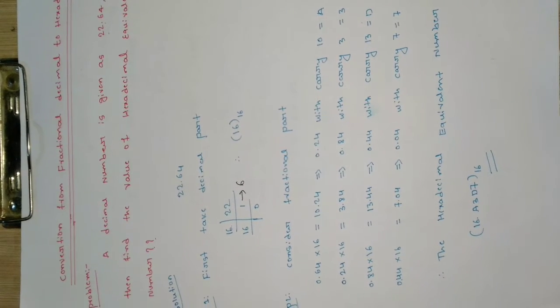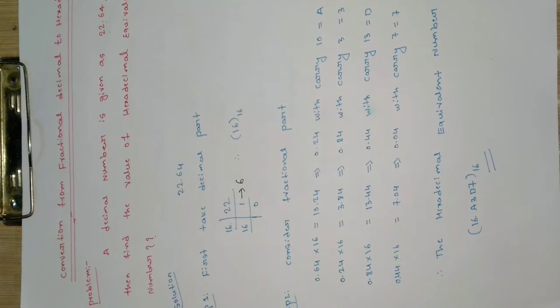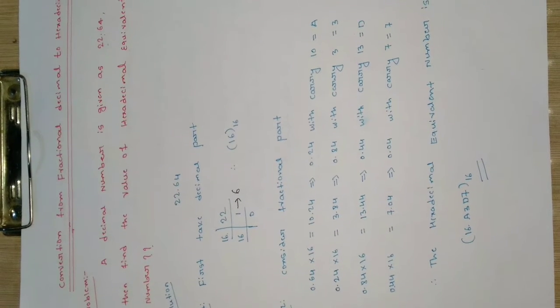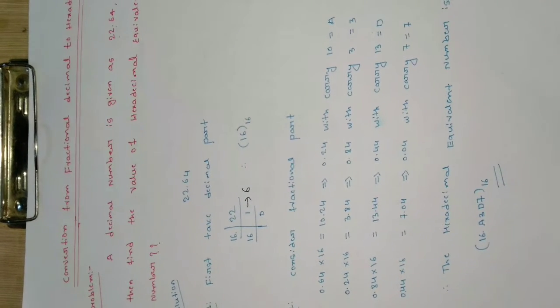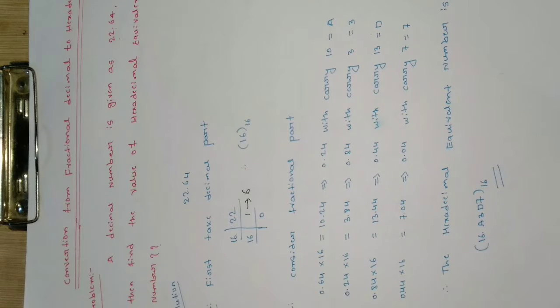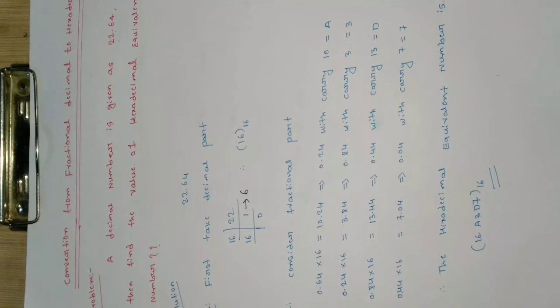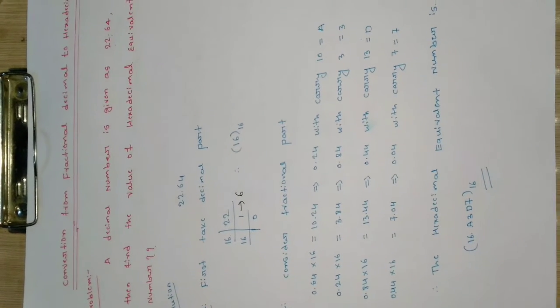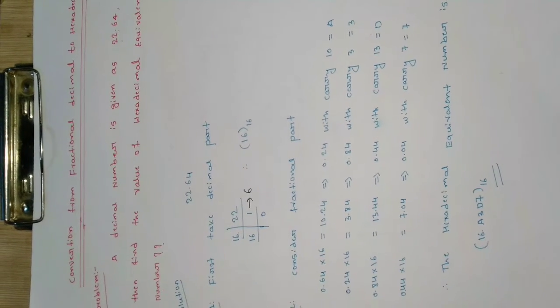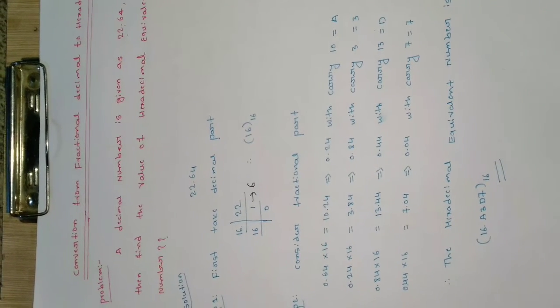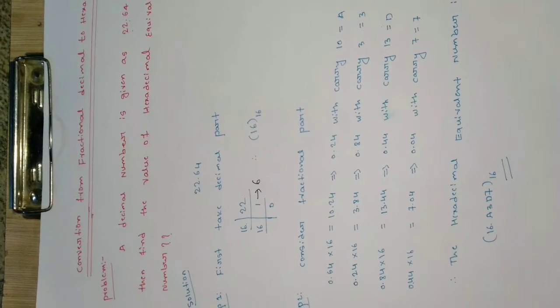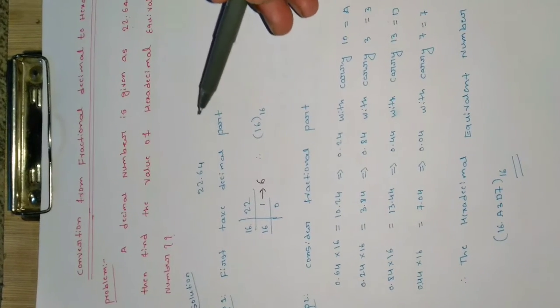The problem is: a decimal number 22.64 is given — find the hexadecimal equivalent. So we need to convert the decimal value 22.64 to hexadecimal form. It consists of two parts, and we solve each part separately.